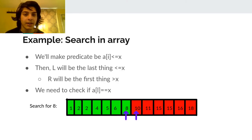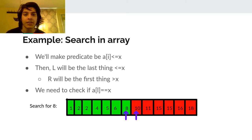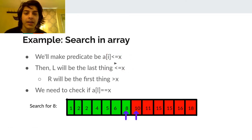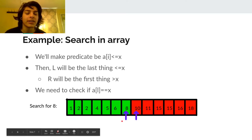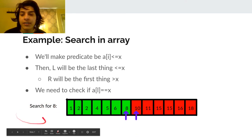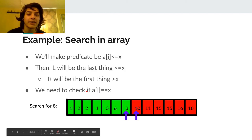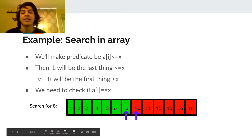Let's do an example: searching for a value in a sorted array. We have a sorted array and some value x we want to find. We'll make the predicate be whether a[i] <= x. At the end, the L pointer will be the last position where a[i] <= x, and R will be the first position where a[i] > x. For example, if searching for 8, L points to the last element <= 8 and R to the first element greater than 8.